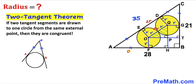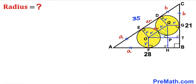Calling segment AF lowercase a, then segment AE is also a. If segment CG is lowercase b, then segment CD is also b. Observing that QG is radius r, segment HB is also r. Likewise, since OE is radius r, segment TB is also r.